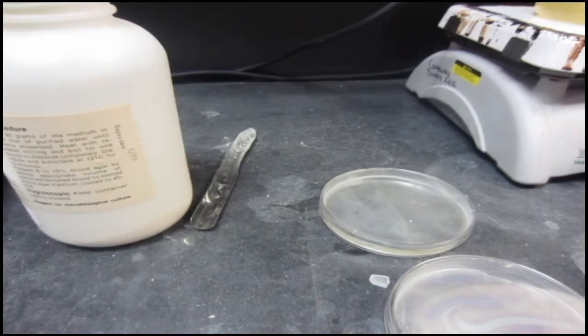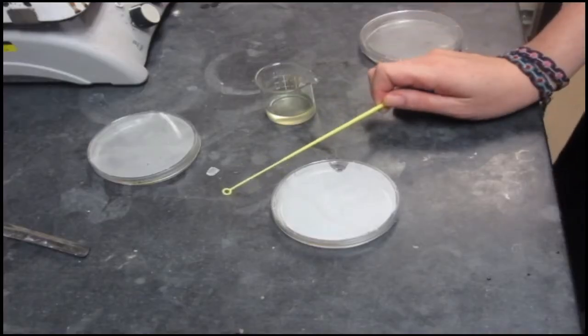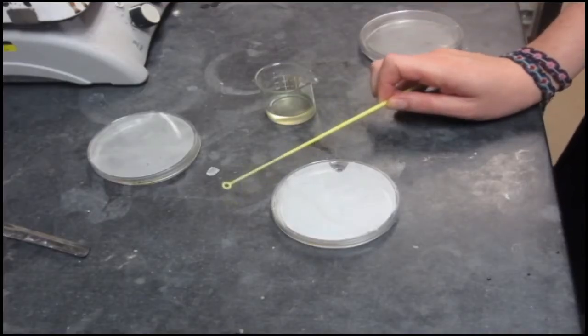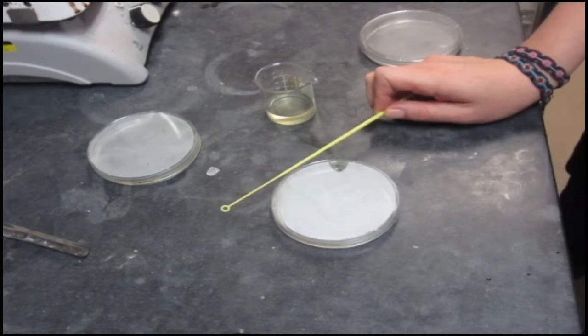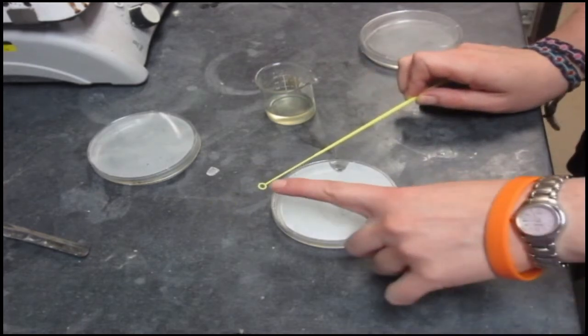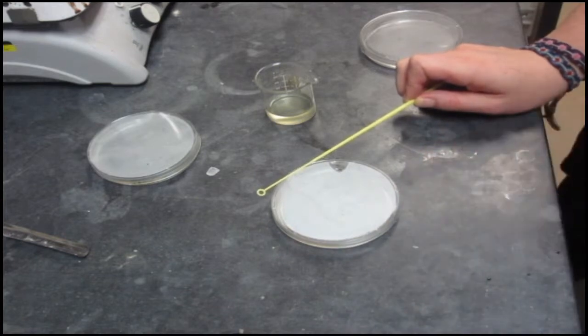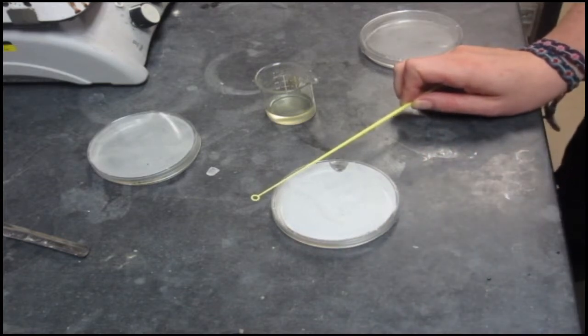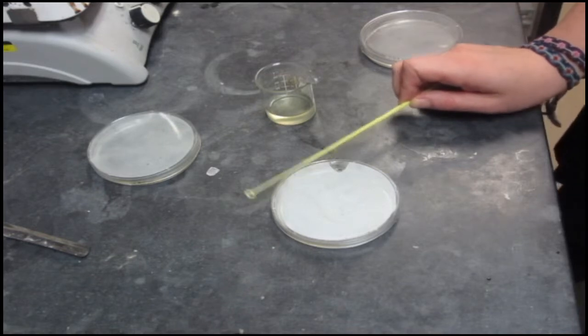When you go to plate your bacteria, you're going to use an inoculating loop like this one. When you pull this straight out of the bag, it's going to be sterile, so you know to start with that. Notice this little loop here. This loop is going to have a constant amount of bacteria that gets attached to it, so you know you'll be plating the same amount of bacteria onto each one of these plates.